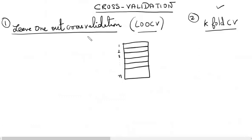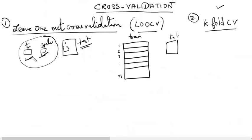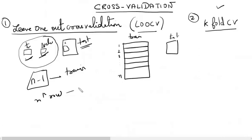Leave-One-Out Cross Validation is very similar to dividing the data into training, validation, and test. We will still divide the data into train and test — the test data set is mandatory. From the training data, instead of dividing it into two comparable parts of training and validation, if we have n rows in the training data set, we will take n minus one rows to train our model and the last nth row will become our validation data.